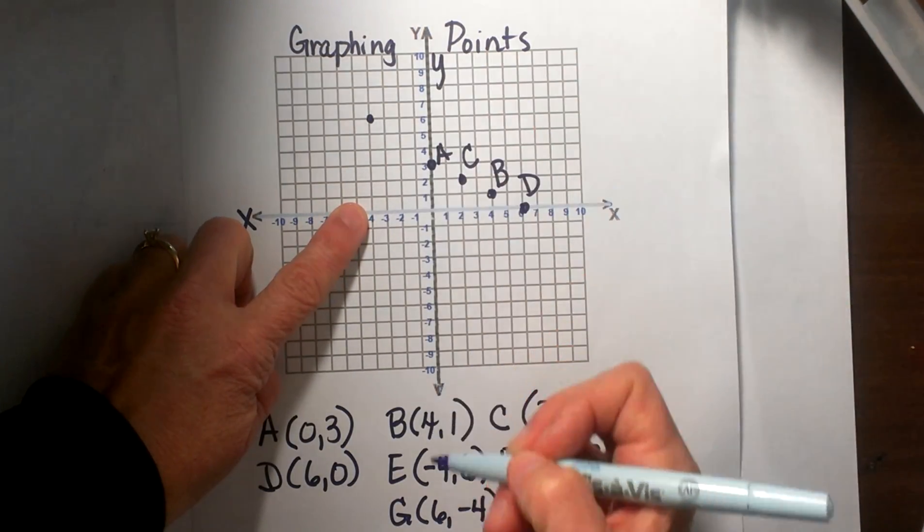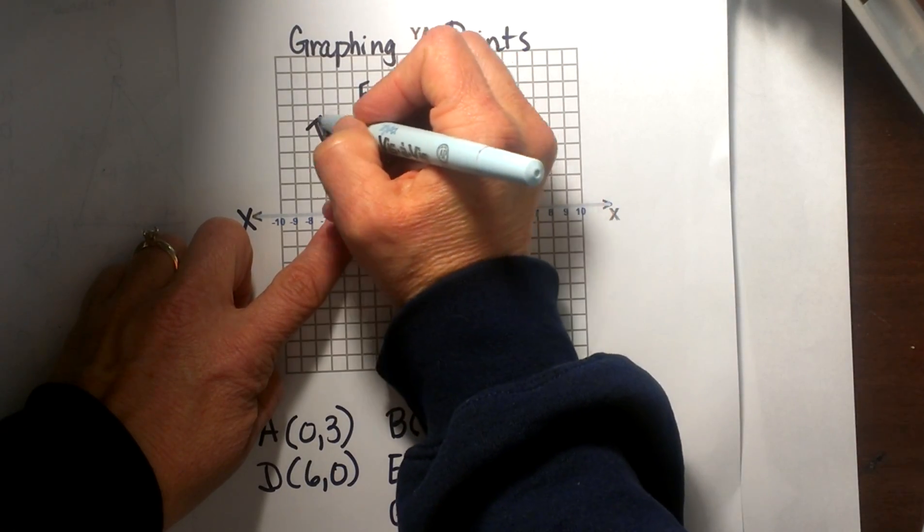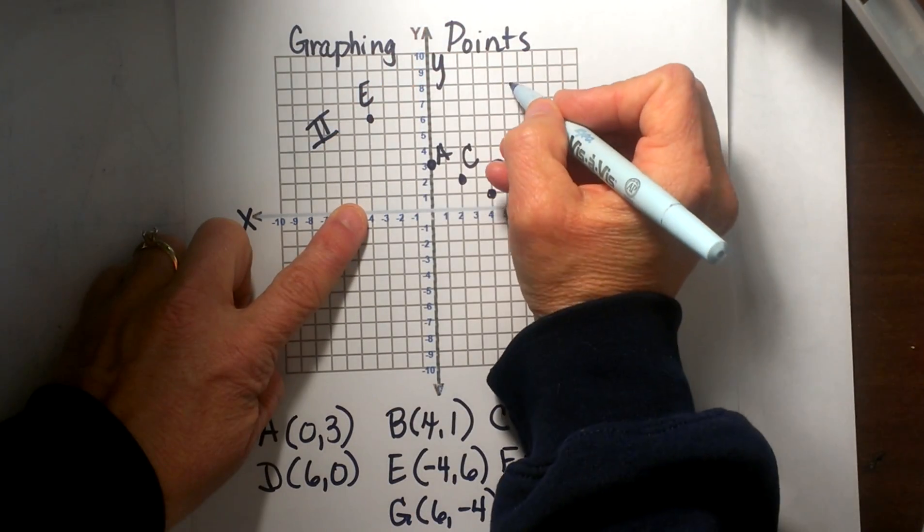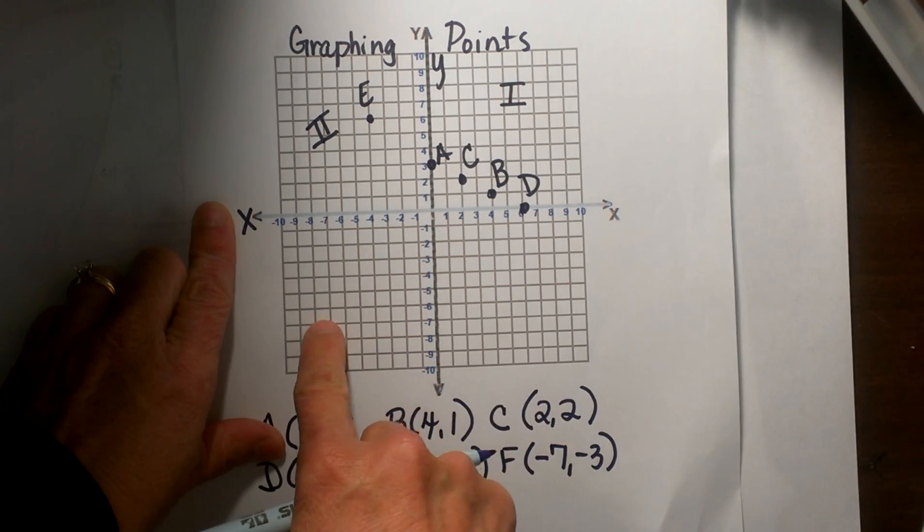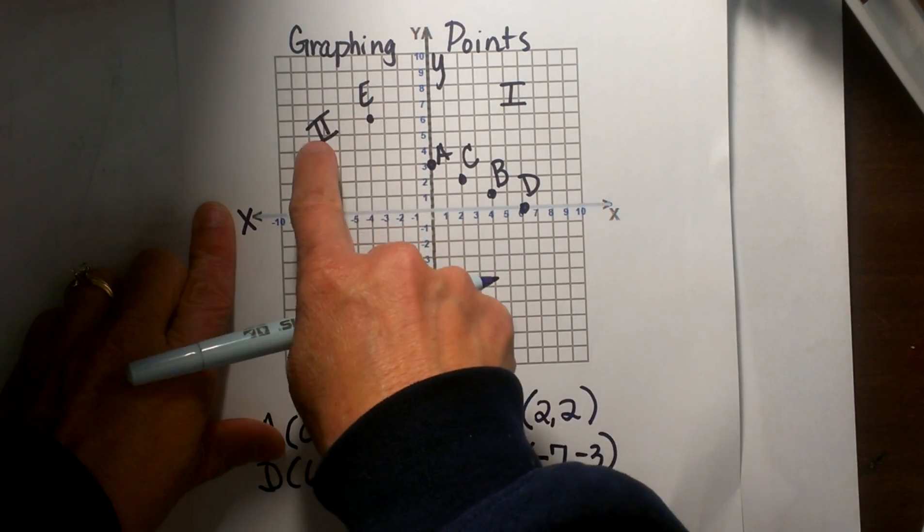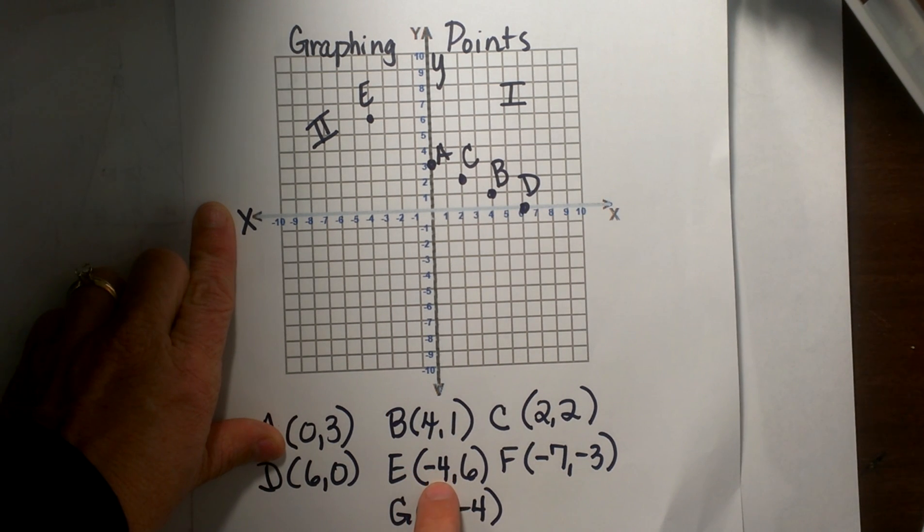And that is E and that quadrant is actually considered quadrant 2. So all the first points ended up in quadrant 1, and we count this 1, 2, quadrant 3, and quadrant 4. So E ended up in quadrant 2, so the sign of all the points in quadrant 2 is a negative followed by a positive.